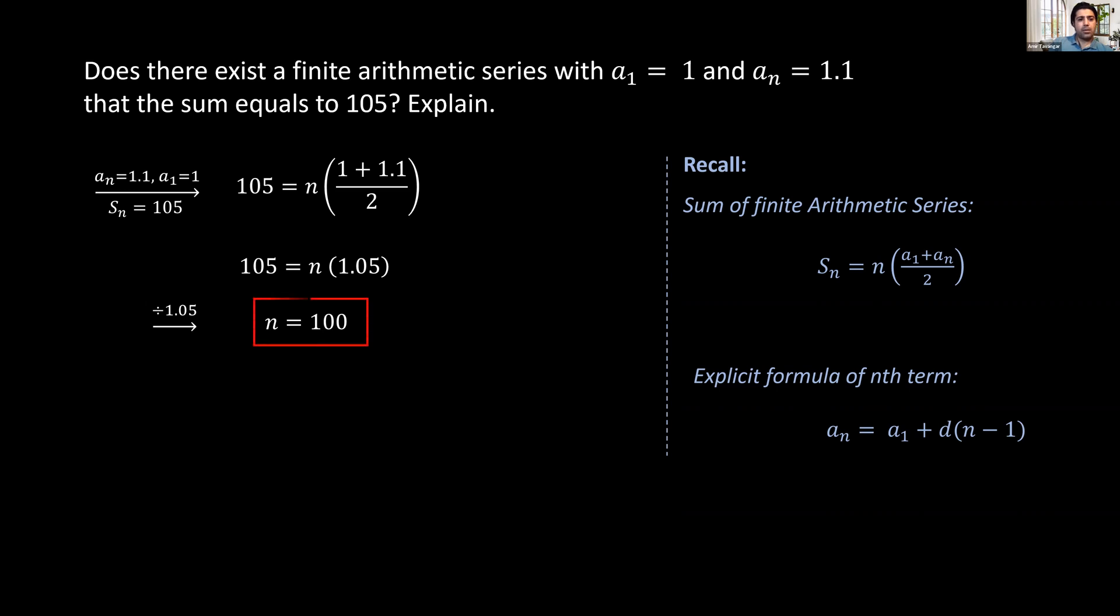Because such n exists, we can conclude that such finite arithmetic series also exists. But we can go one step further. We can use the explicit formula of the nth term to find the common difference as well.